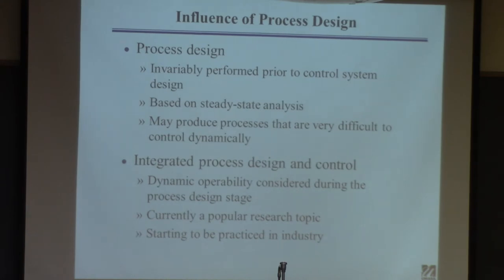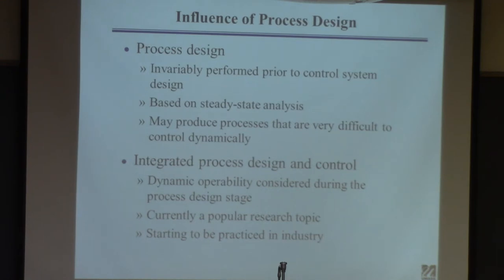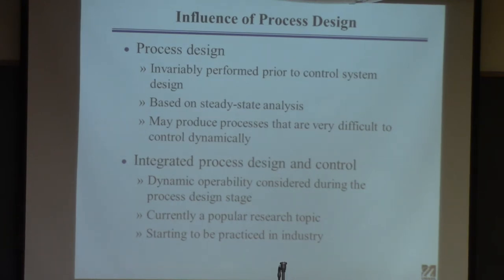The way plants are built is still a two-fold approach. First, there's a process design team. They come in and design the plant using things like Aspen Plus. They put their reactors and columns together, do some analysis, and come out with what they consider an economic design. Then they build the plant — or start to — and then they call the control people in. The earlier the control people get involved, the better.